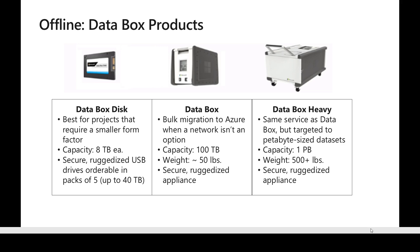The regular Data Box can be used to ship data up to around 100 TB. It weighs roughly 50 pounds and is a secure, rugged appliance used for offline shipping of data. The third option is Data Box Heavy, which is also a huge rugged, secure appliance. We can use it to transfer up to one petabyte of data, and it weighs roughly 500 pounds.